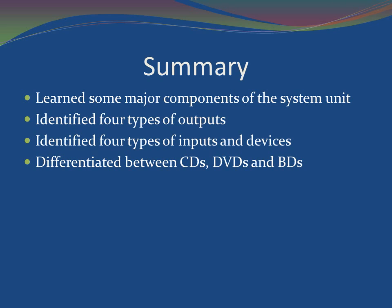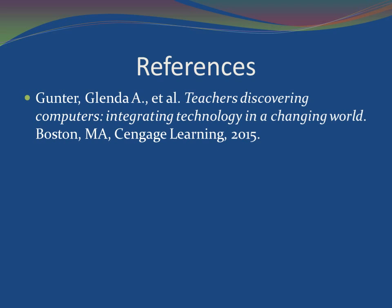Chapter Summary: We should have learned some of the major components of the system unit, identified four types of output, identified four types of input and devices, and differentiated between CDs, DVDs, and Blu-ray discs. After this chapter's lesson, you should have a good understanding of the information processing system and how various hardware devices are used in education. Now that you have a good working knowledge of computer hardware, you can use your newly gained knowledge to help your students understand technology concepts, systems, and operations. Because technology changes so quickly, you also need to stress to your students the importance of being able to transfer current knowledge when learning new technologies. To be continued.